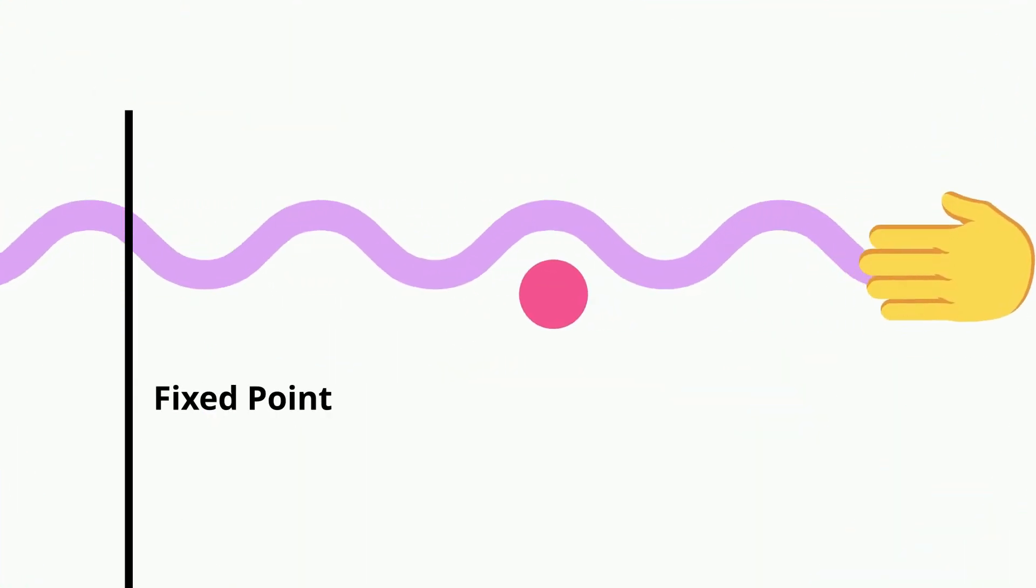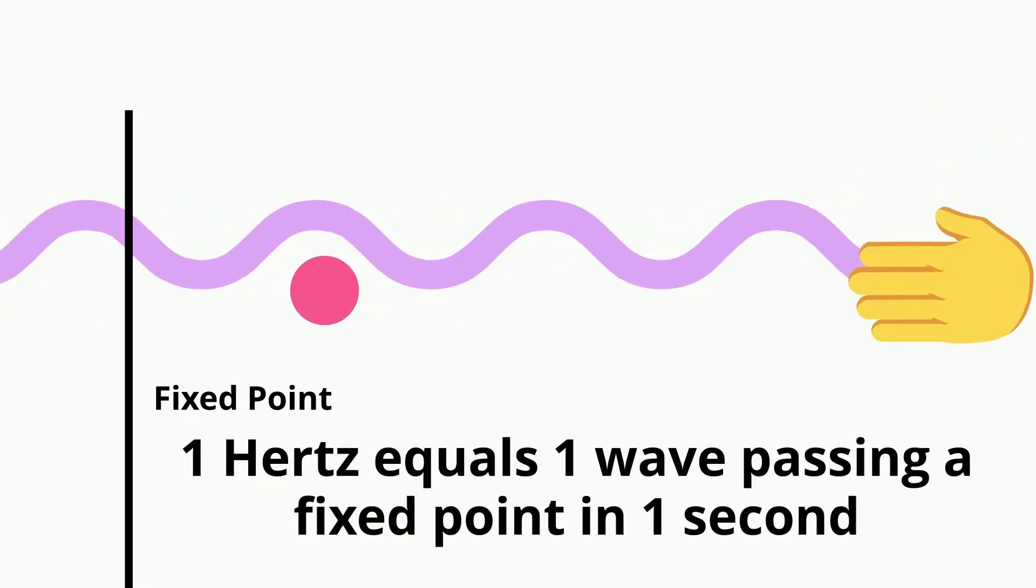Wave frequency is the number of waves that pass a fixed point in a given amount of time. The SI unit for wave frequency is the hertz, where one hertz equals one wave passing a fixed point in one second.